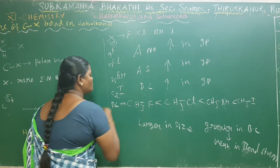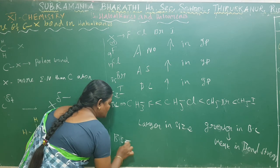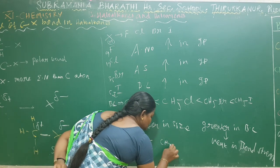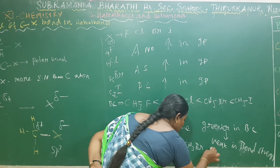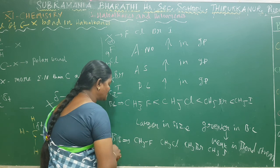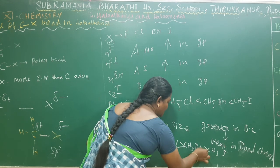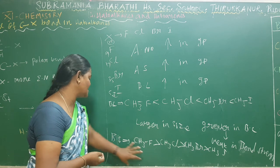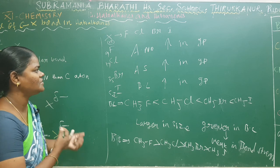The bond strength order is: CH3F > CH3Cl > CH3Br > CH3I. Fluorine has very high bond strength compared to chlorine, bromine, and iodine, because it is smaller in size. Smaller size means more bonding strength.